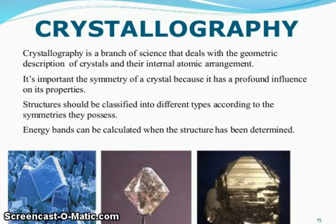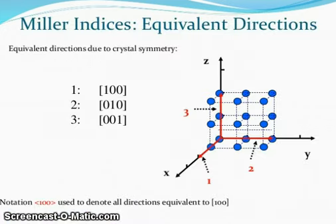Crystallography is a branch of science that deals with the geometrical descriptions of crystals and their internal atomic arrangement. The symmetry of crystals is important because it has profound influence on its properties. The structure should be classified into different types according to the symmetries they possess. Energy bands can be calculated when the structure has been determined. For Miller indices, equivalent directions.